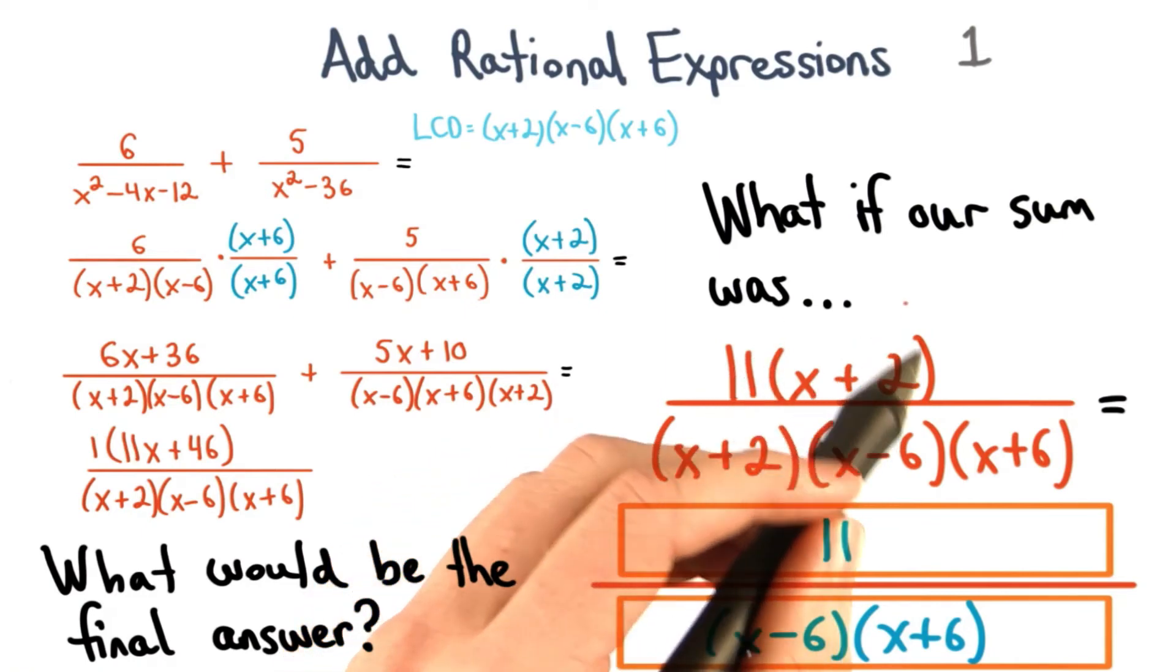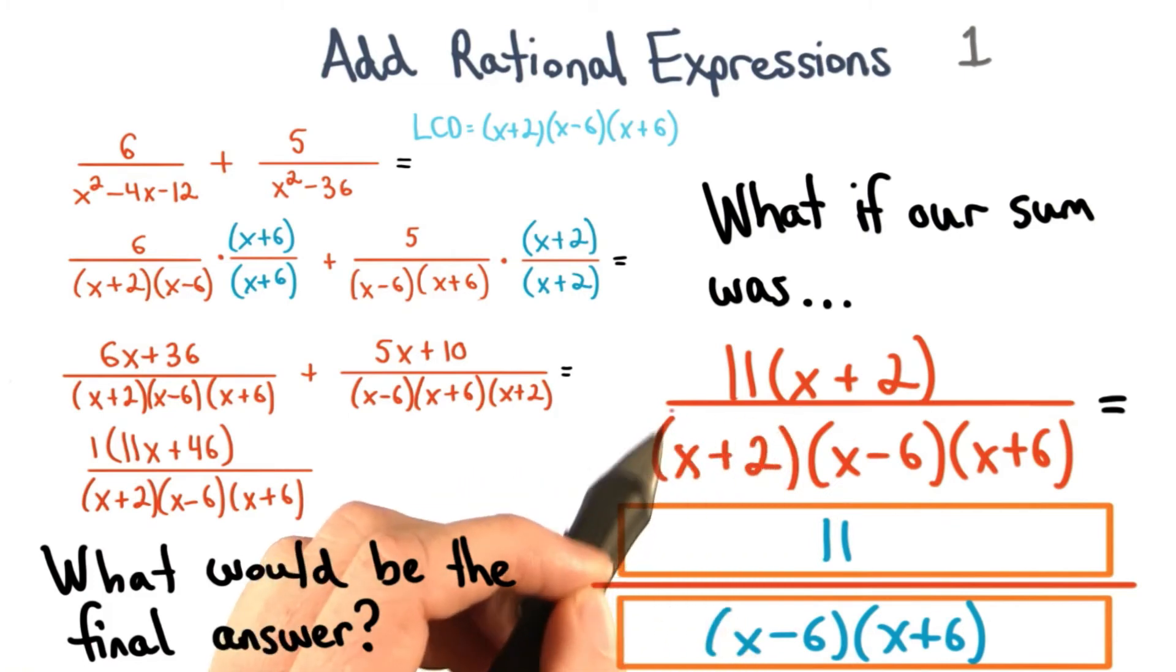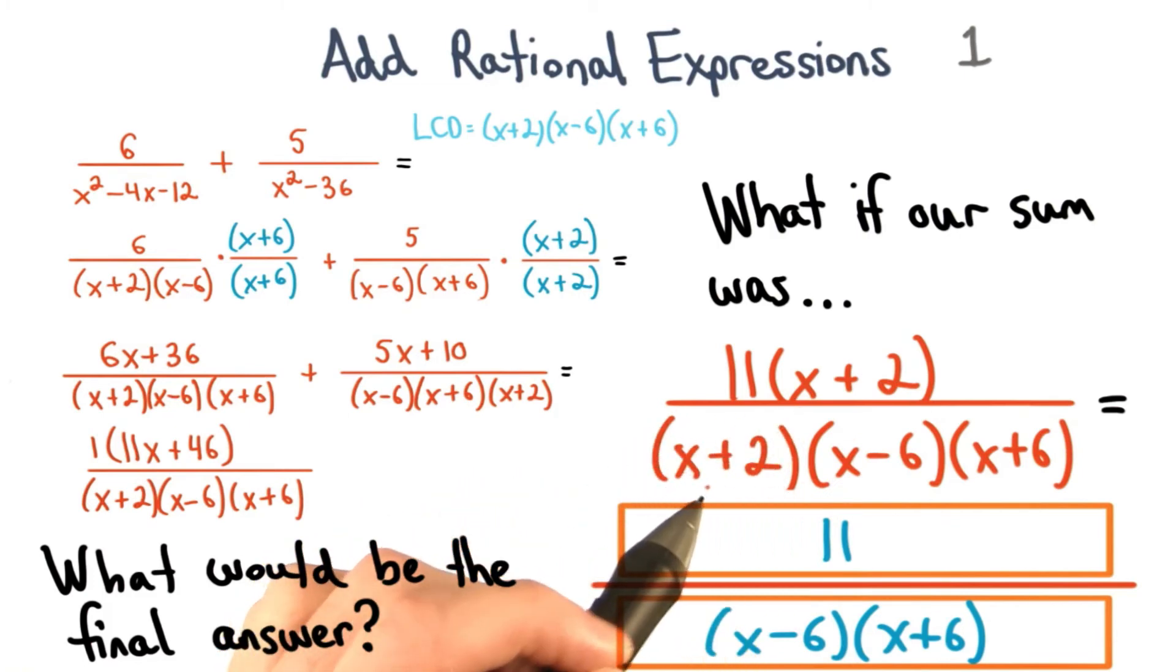Now we can see this x plus 2 is a factor in the numerator and in the denominator, which means we can simplify. These factors cancel to 1, and we're left with 11 divided by x minus 6 times x plus 6.